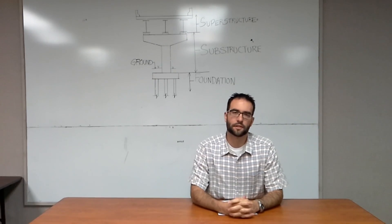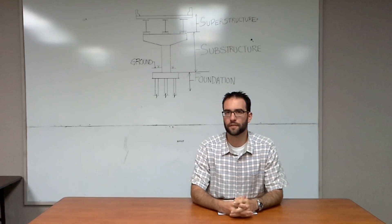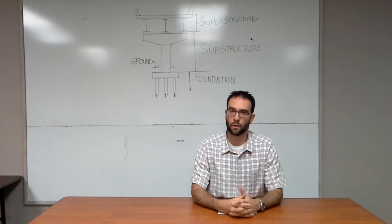The substructure extends from the bottom of the beams to the top of the foundation elements. This portion of the bridge has to support the superstructure, and it generally consists of either a hammerhead configuration, which is shown behind me, or a pile vent, or a wall above it.